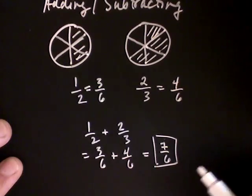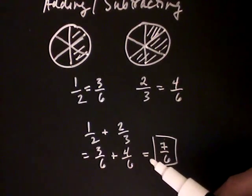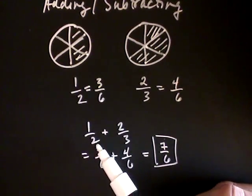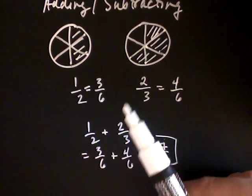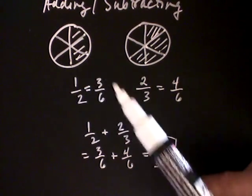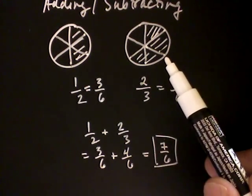So, when you add two fractions together, you have to make sure that your denominators are the same. So, at first, my denominators were a two and a three. That's because the first pizza was originally chopped into two pieces, and the other pizza was chopped into three pieces.